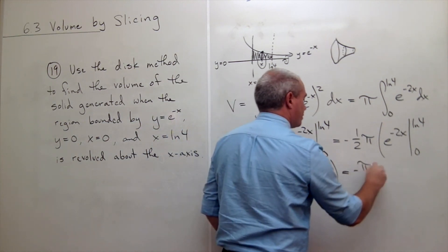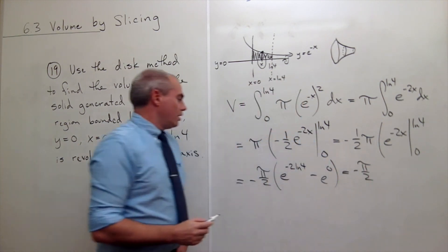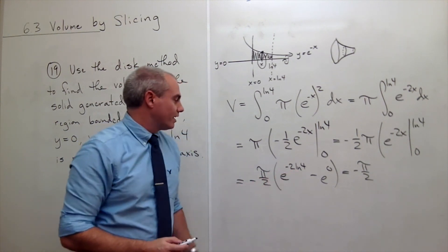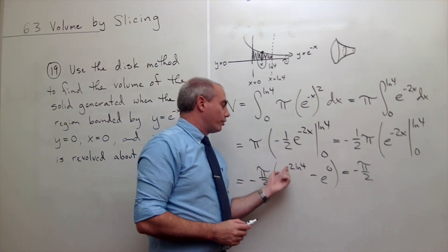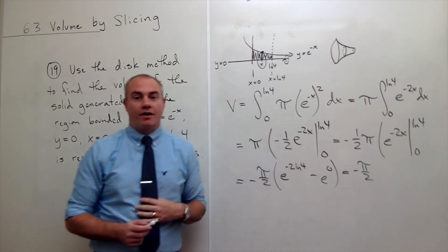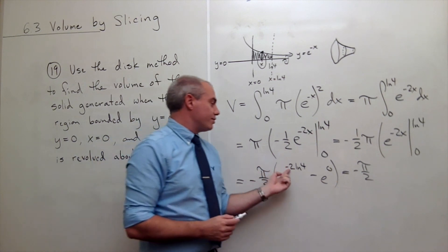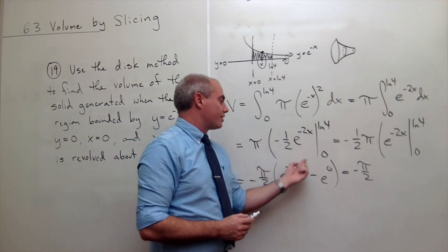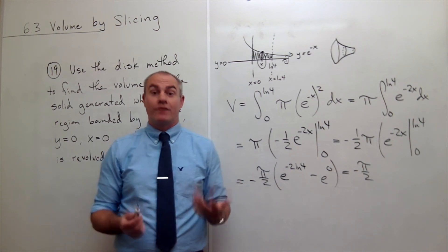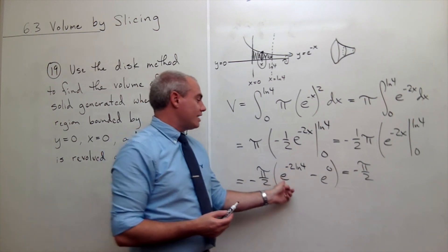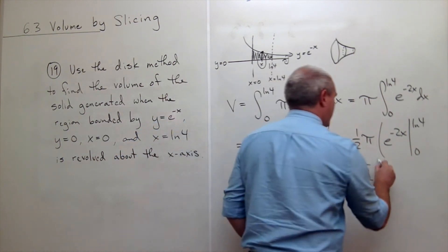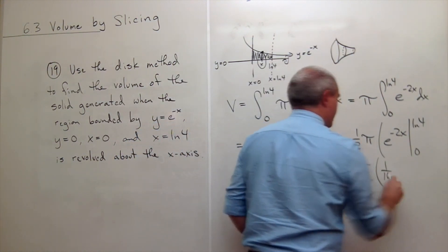I still have negative pi over 2. So what's e to the negative 2 ln 4? By the power rule, I can bring that power negative 2 up as the exponent of the 4. If I do, I get ln of 4 to the negative 2. 4 to the negative 2 is 1 over 16. So I get e to the ln of 1 16th, which is otherwise known as 1 16th.